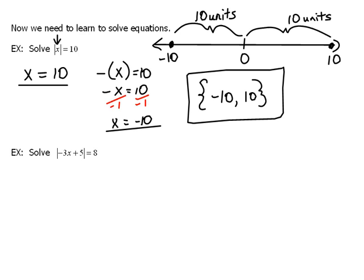Now, in this next problem, we have an absolute value that is more involved. So, we're going to use the exact same procedure, though. If we took what was inside here as is, that would be equal to 8. Or, we could also take the opposite of that negative 3x plus 5, and that should equal 8 also.